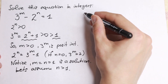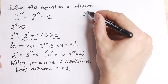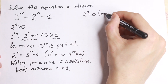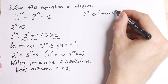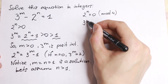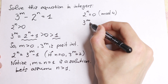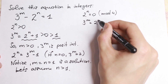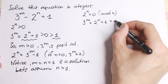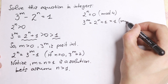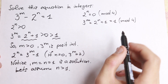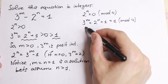For n greater than 1, we will have 2 to the power n equal to 0 mod 4. As a result, we will have 3 to the power m equal to 2 to the power n plus 1, which is equal to 1 mod 4. So it's really good to use a substitution here.